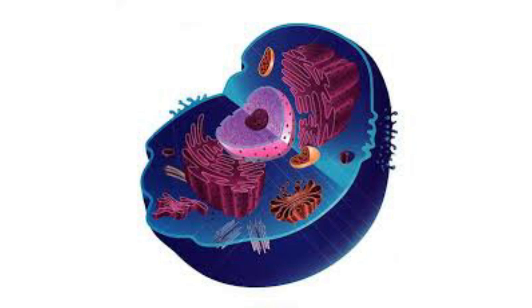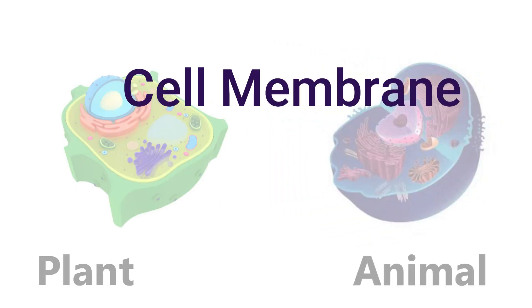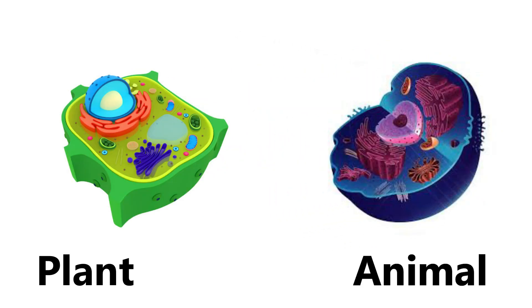Let's examine a eukaryotic cell. Before we jump in, remember there are two types of eukaryotic cells, plant and animal. Like we discussed before, all cells have a cell membrane and cytoplasm. Let's take a look at the nucleus, the control center of the cell.